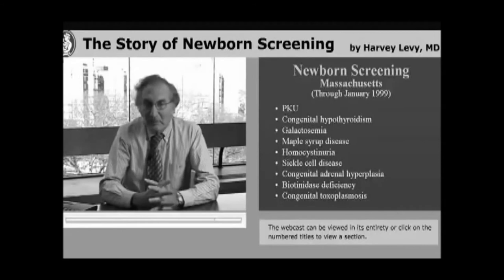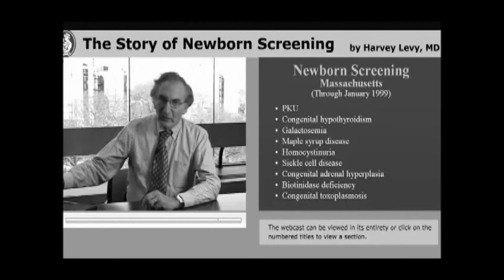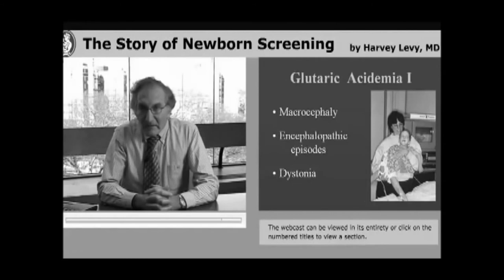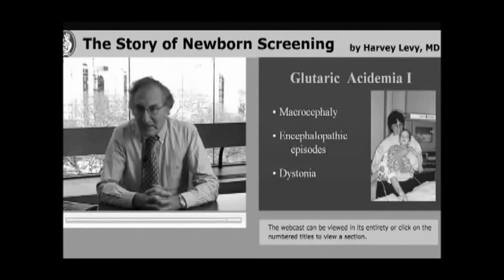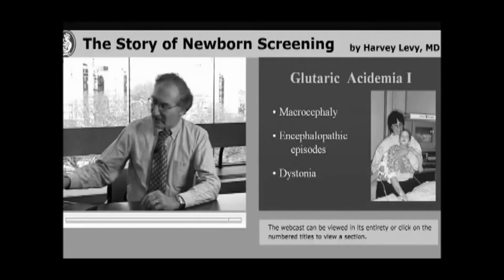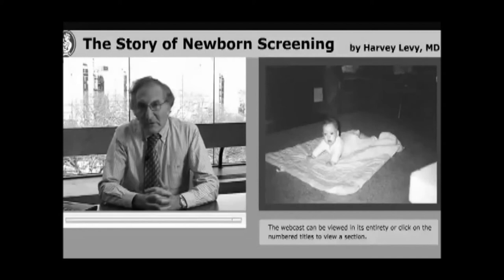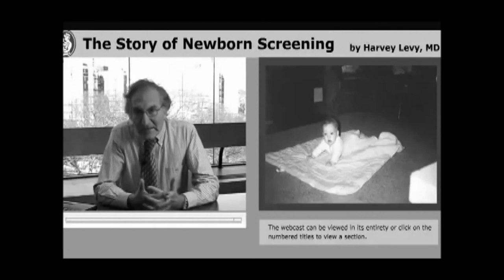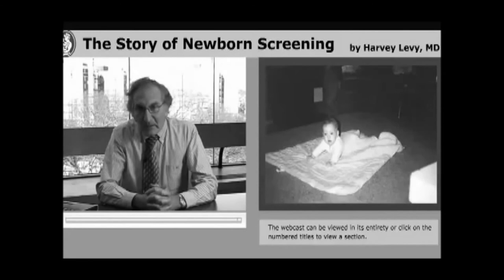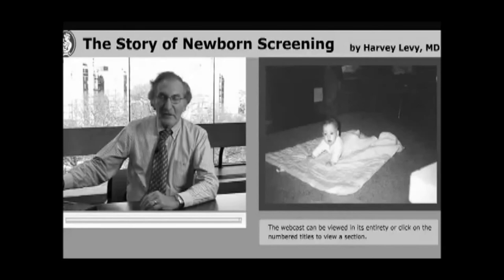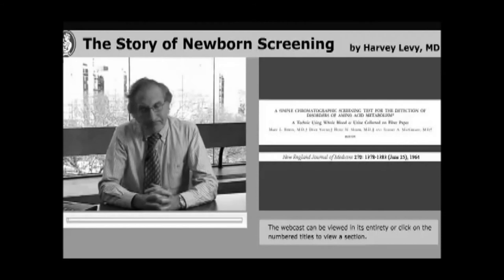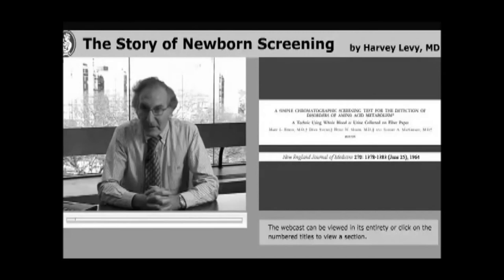By January 1999 in Massachusetts, nine disorders were being identified in the newborn screen. However, it was also evident that some babies were left out of the mix. An example is a baby named Samantha with glutaric acidemia, who suffered repeated encephalopathic episodes and dystonia and was left terribly damaged — yet she had been a perfectly normal-appearing newborn at four months old. Glutaric acidemia was a disease that could respond to early neonatal therapy with prevention of clinical complications, if only it could be diagnosed in the newborn period. The techniques, however, simply were not there.